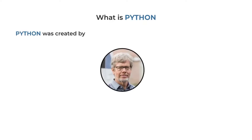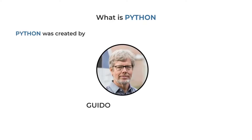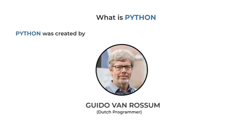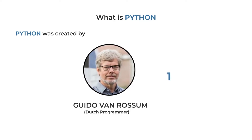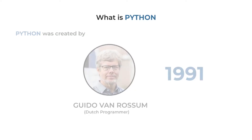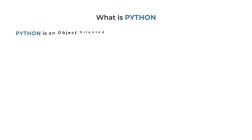Python is a programming language which was created by Guido van Rossum. He is a Dutch programmer. He created it in 1991, and his goal was to make it simpler.